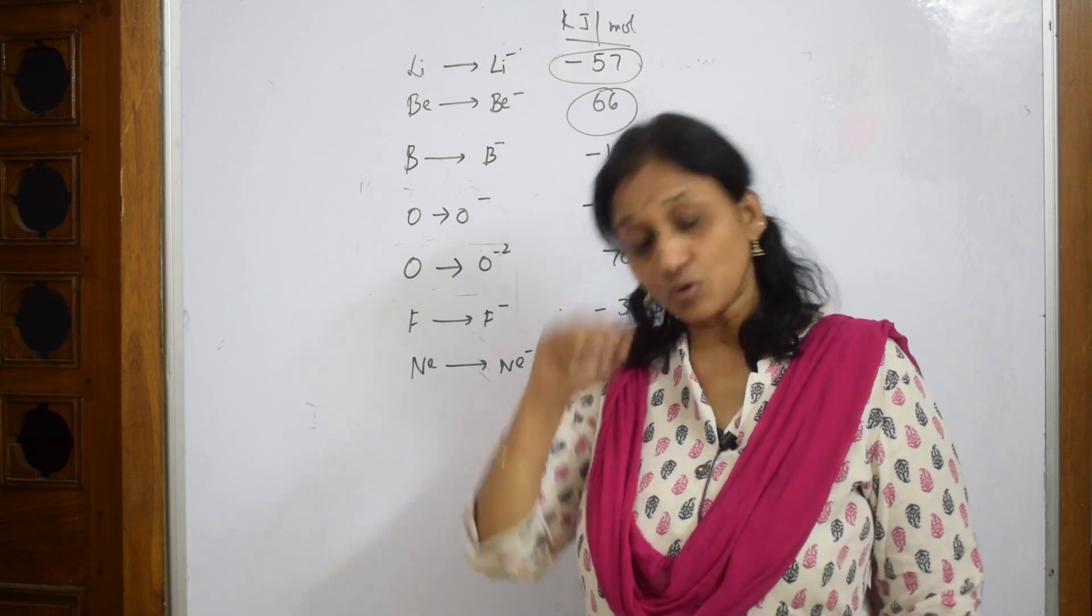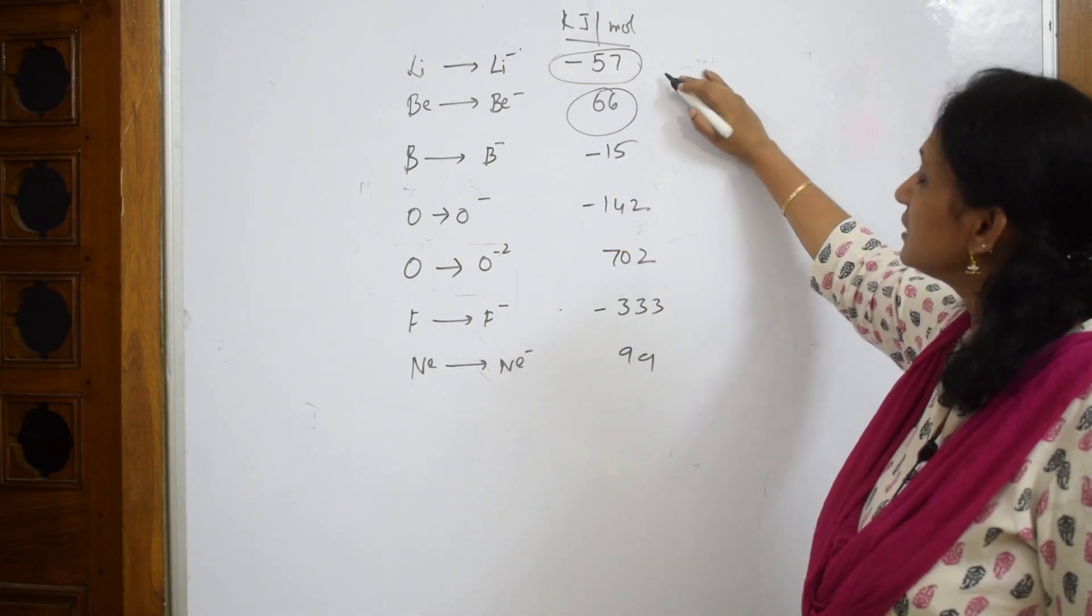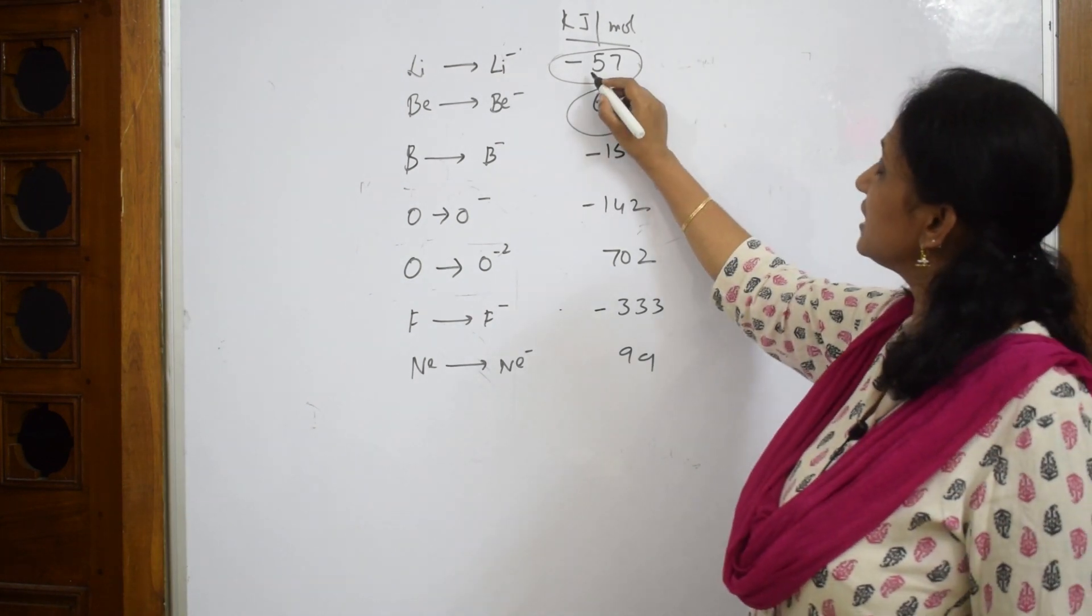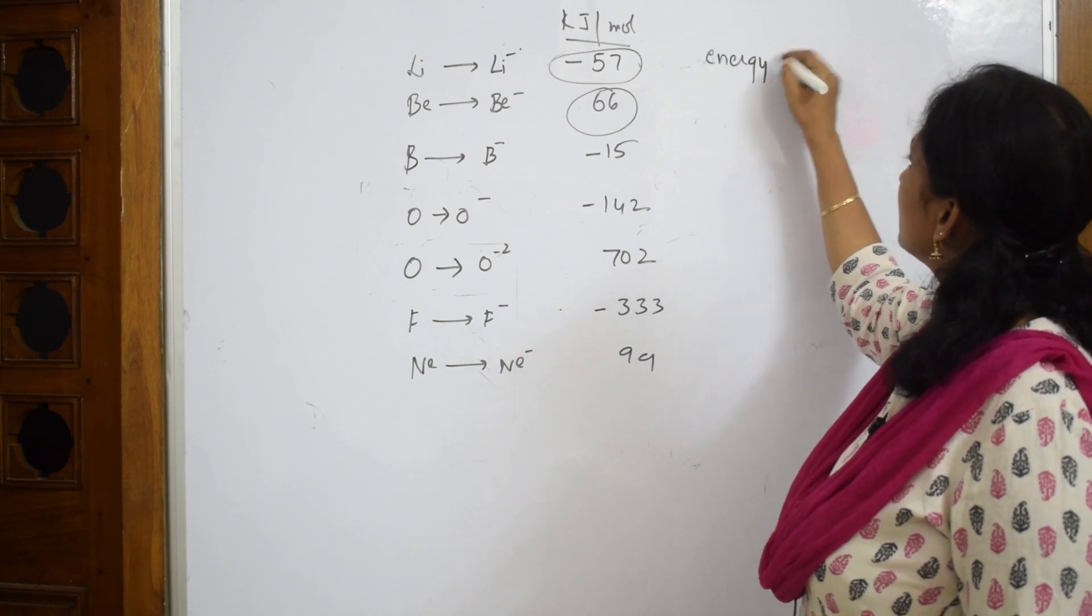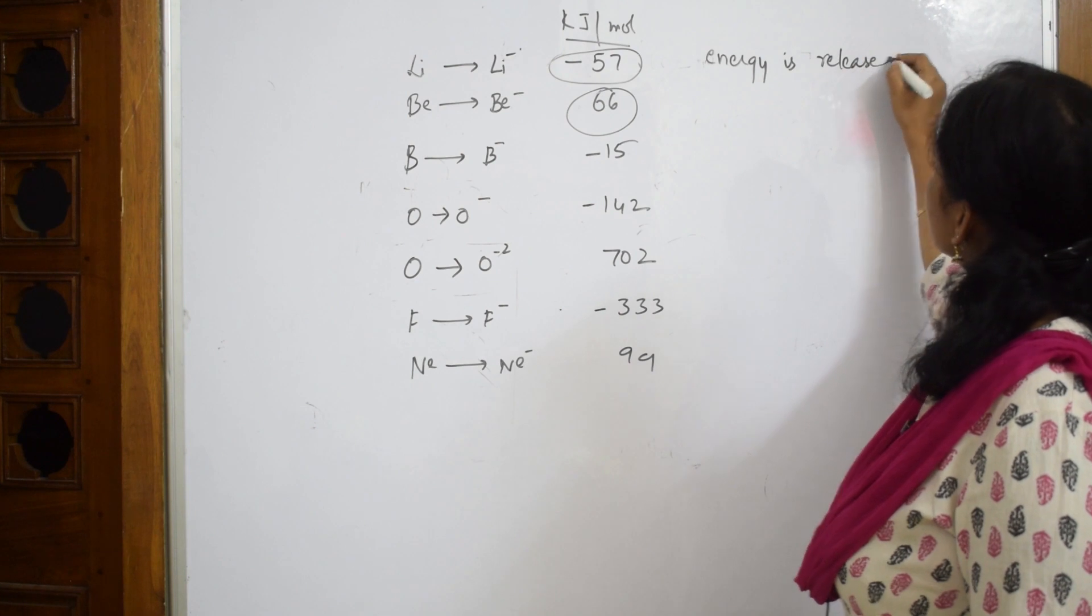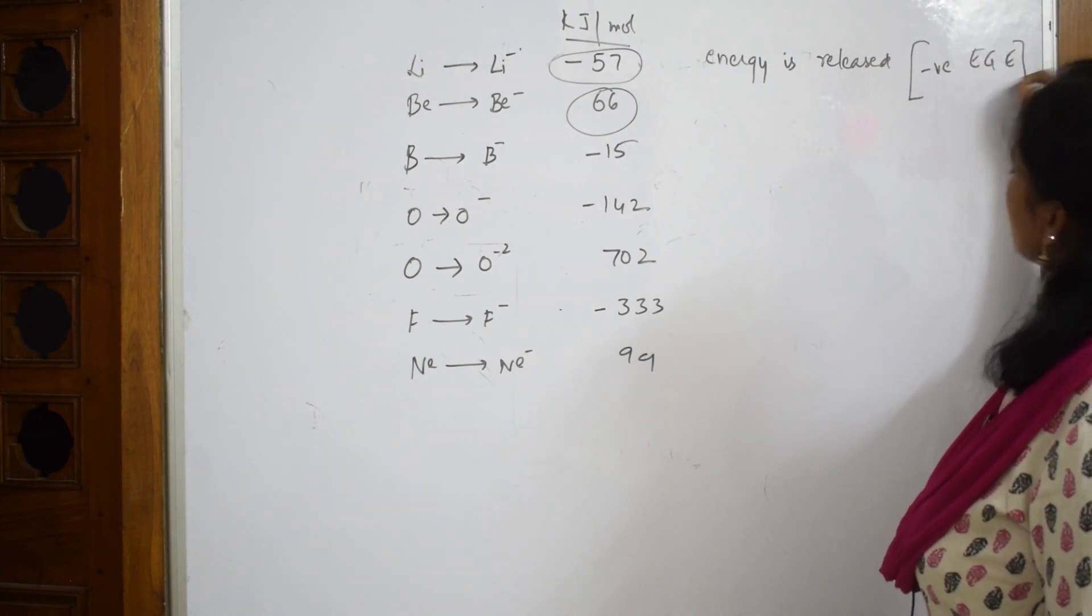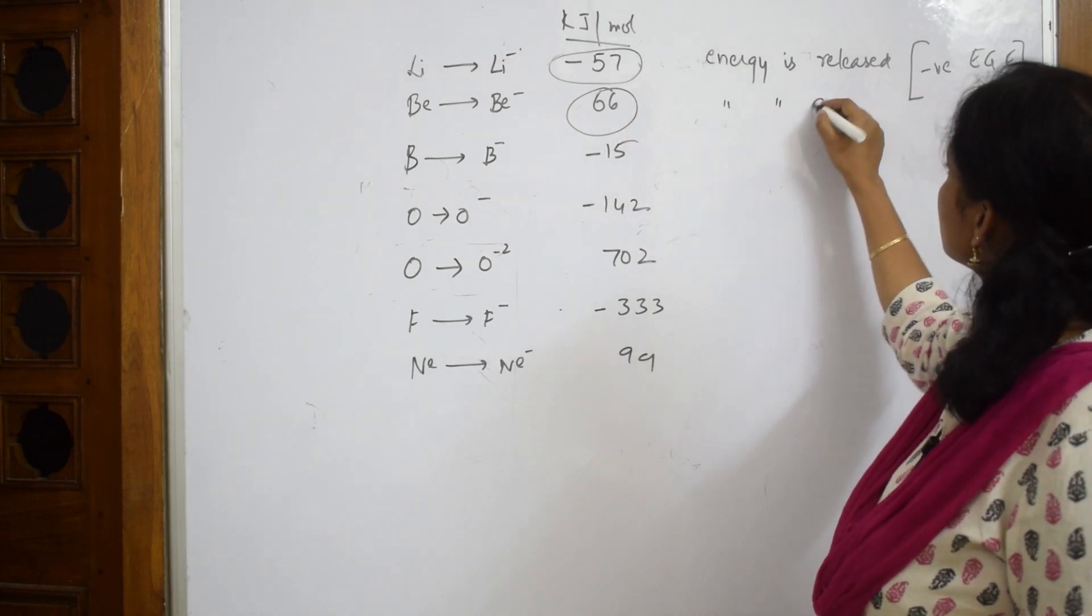Here, this negative electron gain enthalpy - whenever you're getting negative electron gain enthalpy, that means energy is released. This is called negative electron gain enthalpy. And suppose if you have positive value, energy is absorbed. It is positive electron gain enthalpy values.